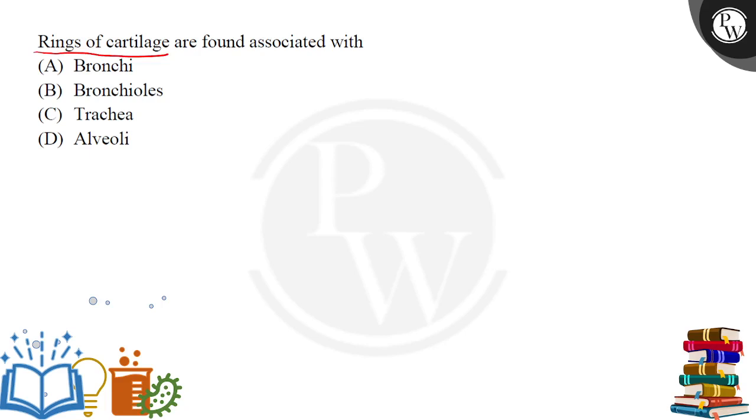Now we have to tell which structures we will get rings of cartilage attached. So basically this is our trachea, which we also call the windpipe. It is divided in two parts.